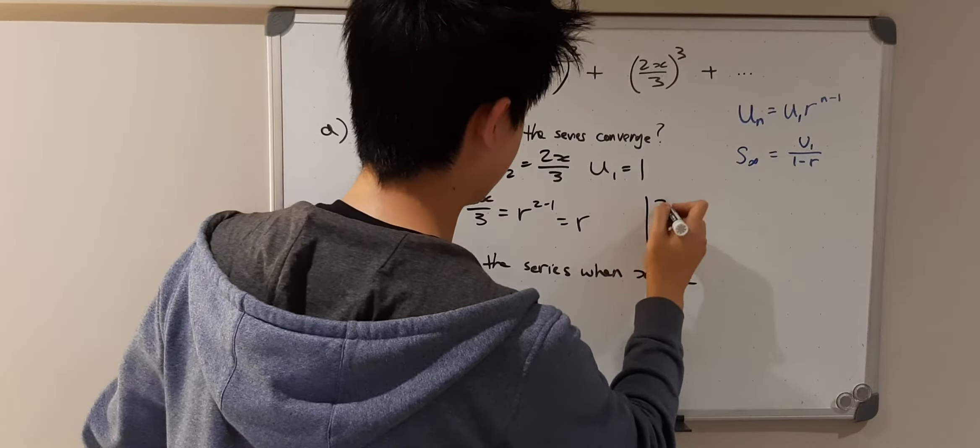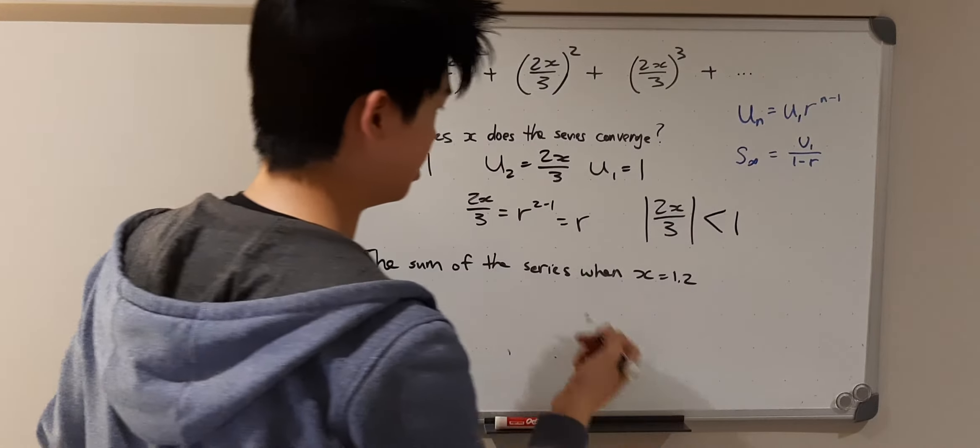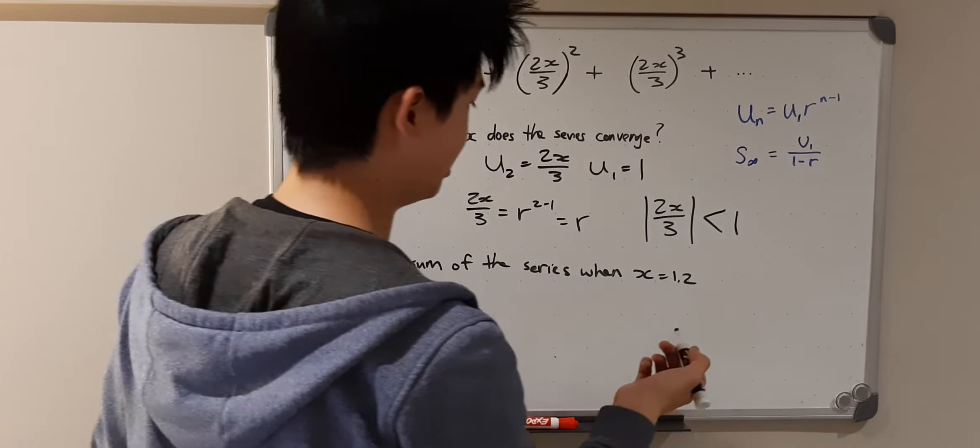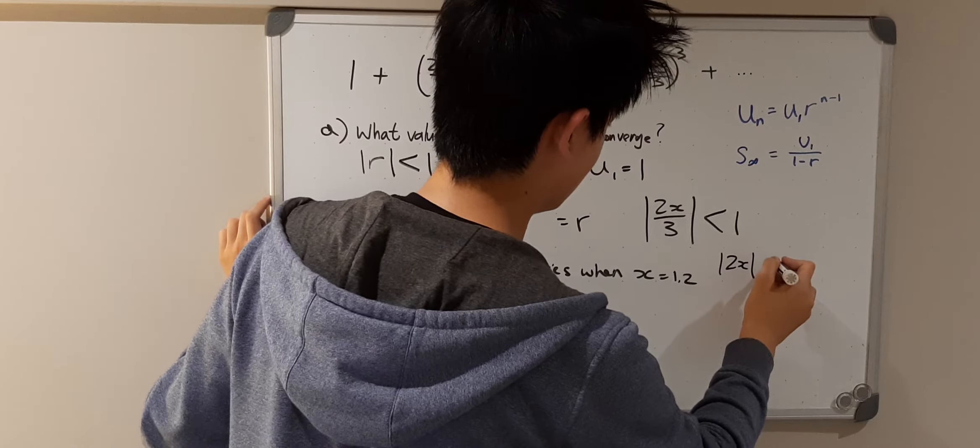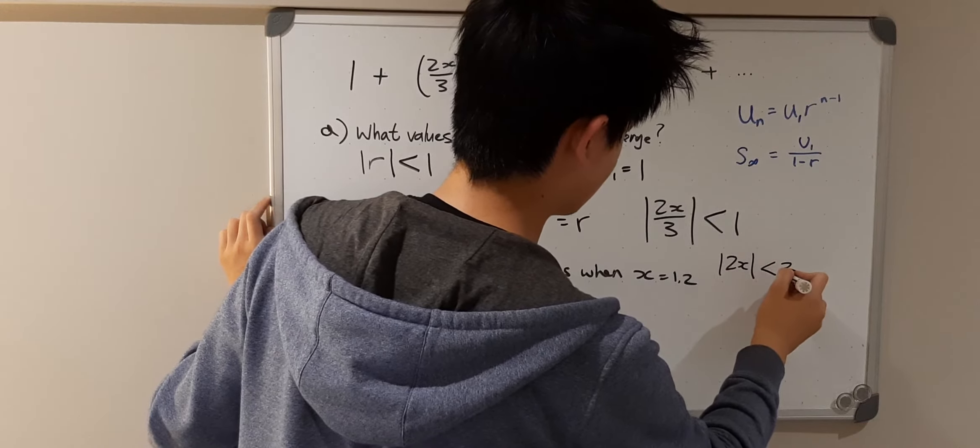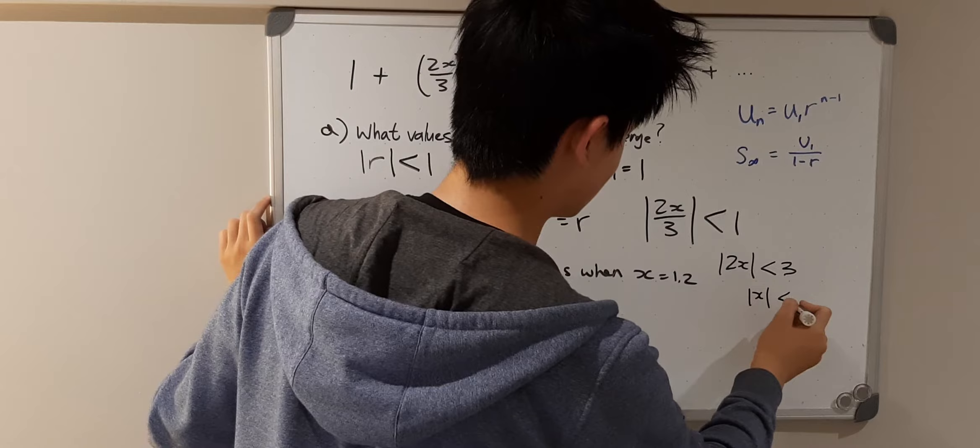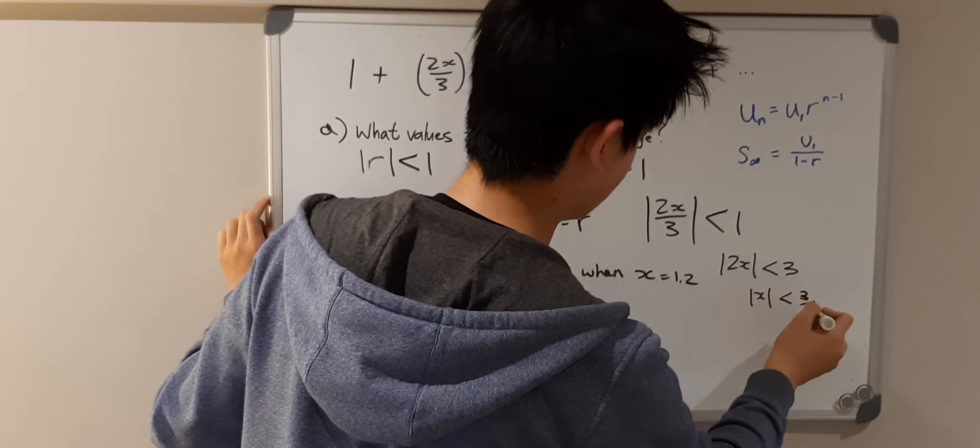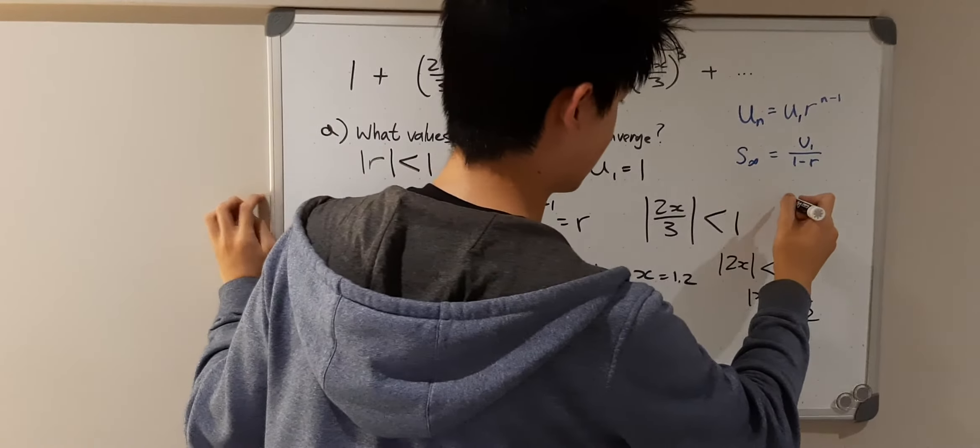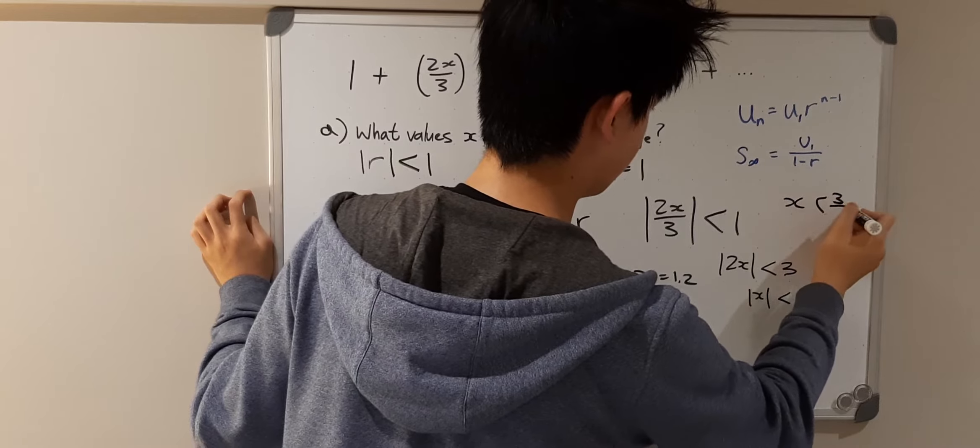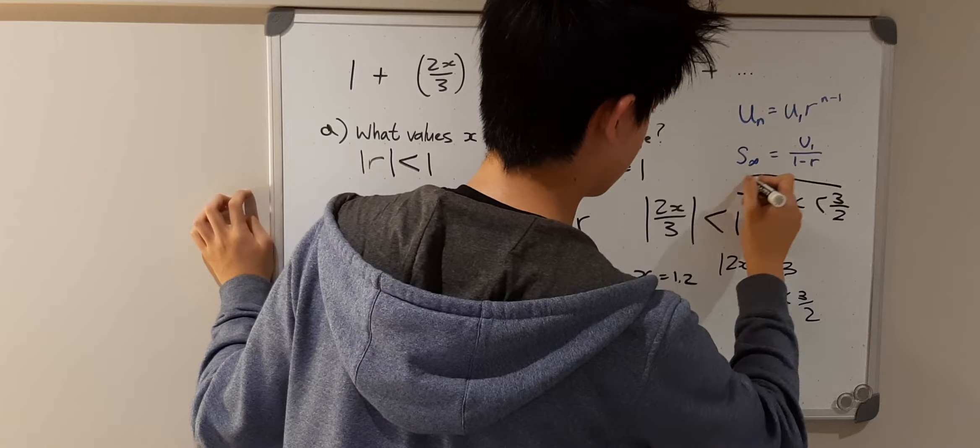So the absolute value of 2x over 3 must be less than 1, and then now we can multiply by 3 on both sides. So the absolute value of 2x must be less than 3. So for what values? Here we go, and then we can rearrange that and just say that x must be less than 3 over 2 and more than minus 3 over 2. So this is the solution for the first question.